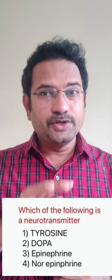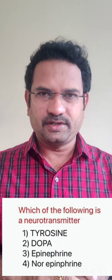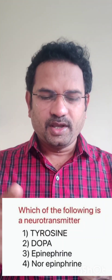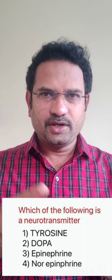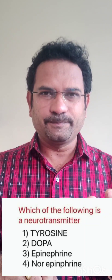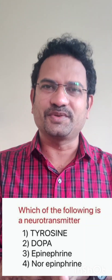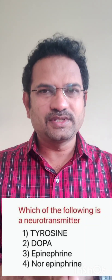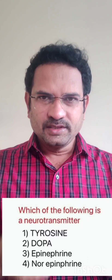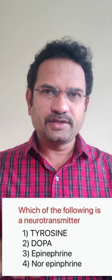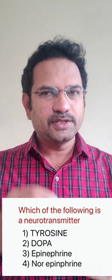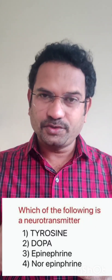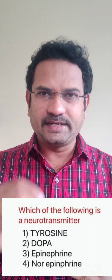Which of the following is a neurotransmitter? Options are: tyrosine, dopa, epinephrine, norepinephrine. This process involves the sympathetic nervous system. The sympathetic nervous system neurotransmitter is norepinephrine, also known as noradrenaline. Understand that epinephrine and adrenaline are synonyms.